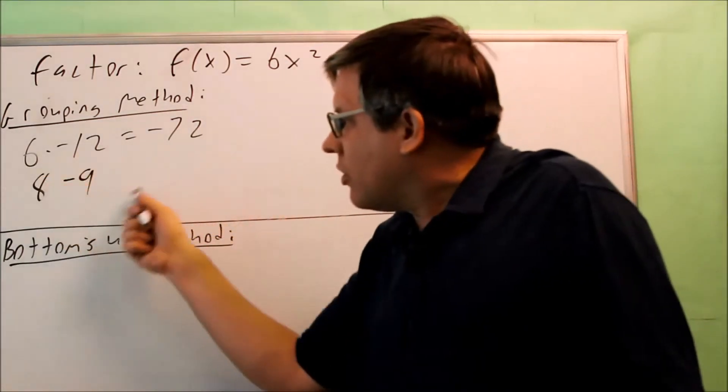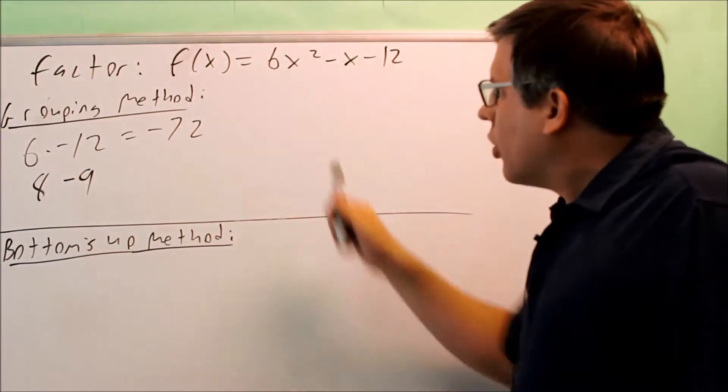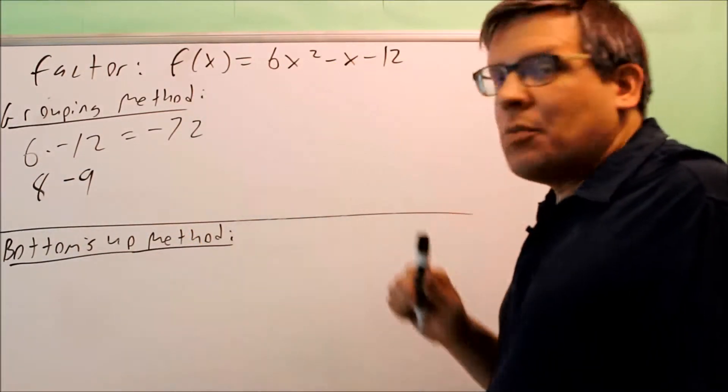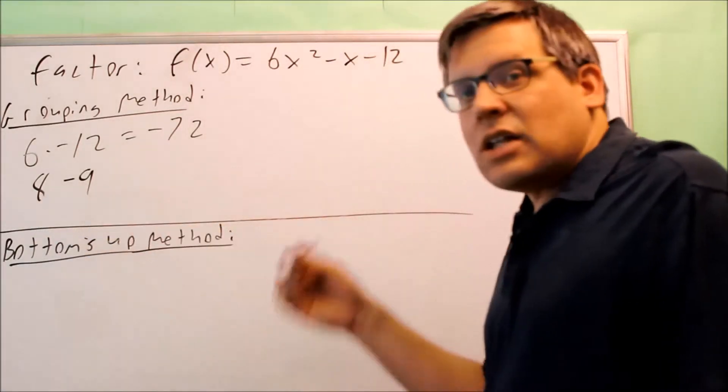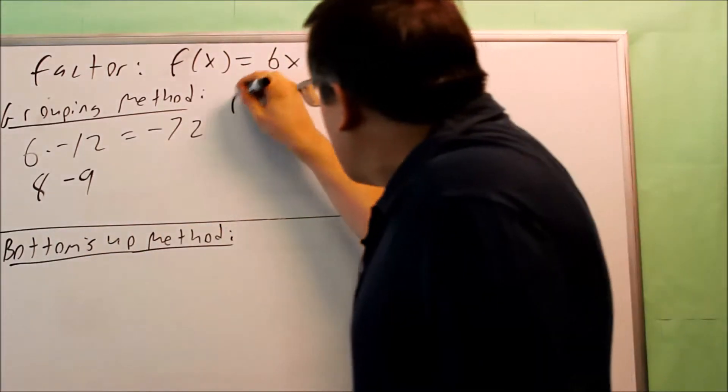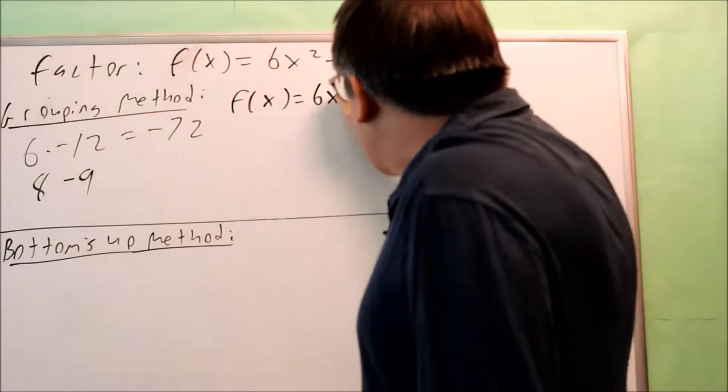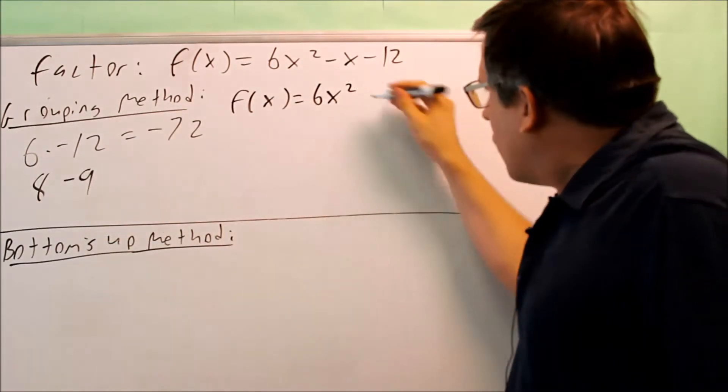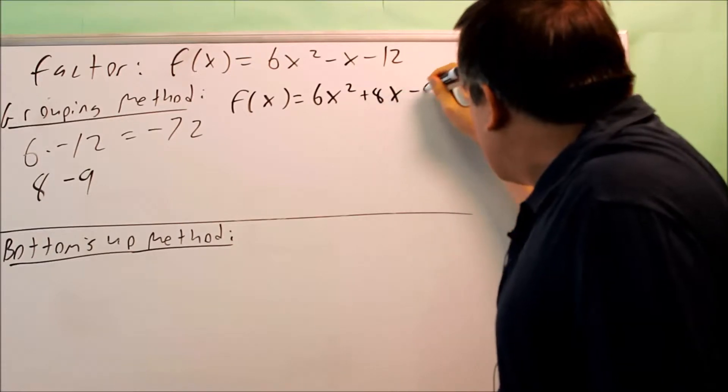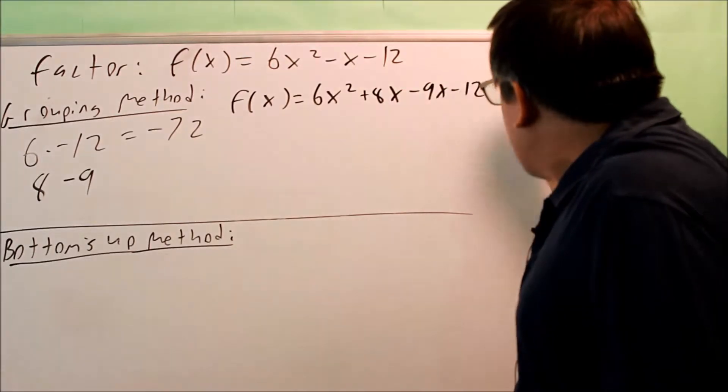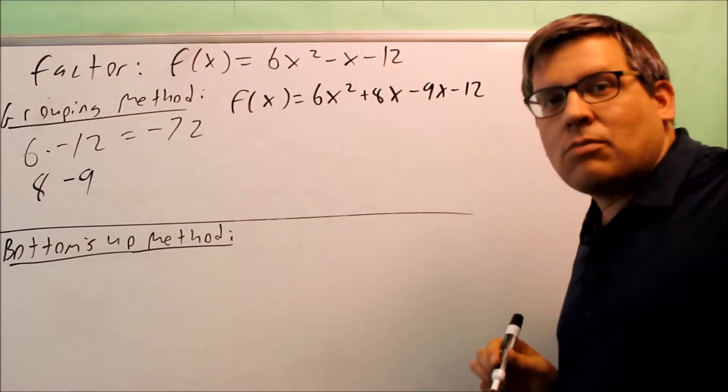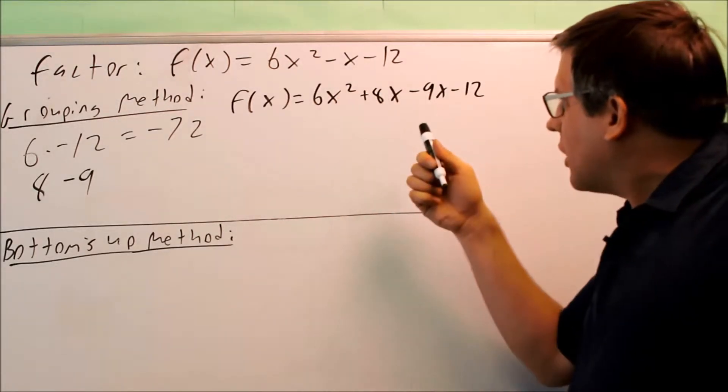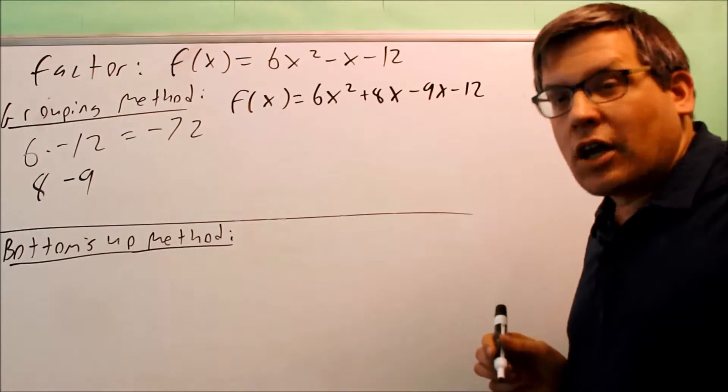Now the reason why we're doing this process here is because we're going to end up rewriting the middle term. So instead of writing negative x, I'm going to instead use 8 and negative 9. So when I rewrite this, I get 6x squared. Now it doesn't matter which one of these we put first. I'll do plus 8x and minus 9x and then minus 12. Notice that if I simplify this, I do get exactly the same thing I started with.